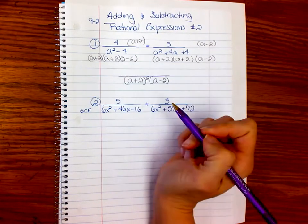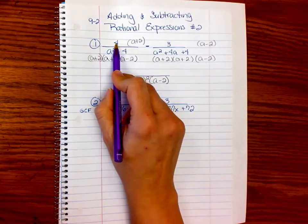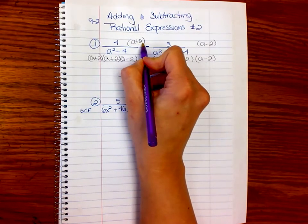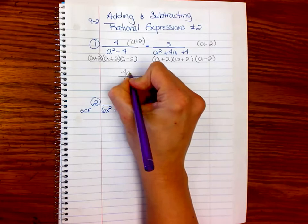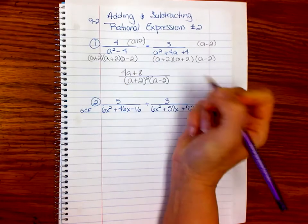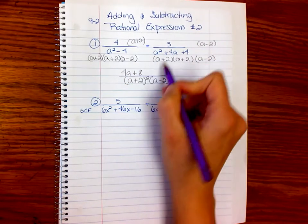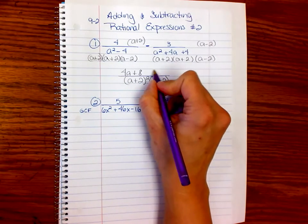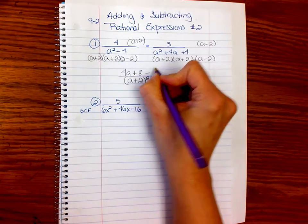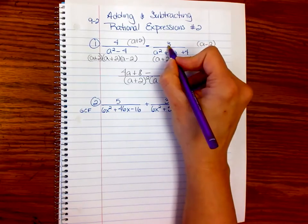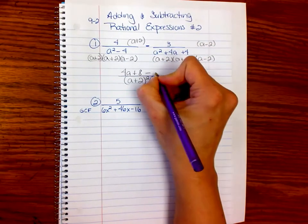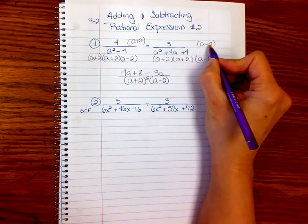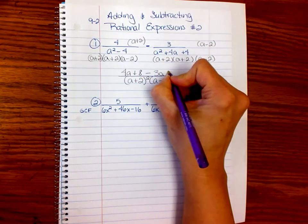The first one is 4 times a plus 2. So that's 4a plus 8. The next one, and since it's a common denominator, I'm going to write them both in the numerator here. So I'm going to say minus, now let's multiply that out. What's 3 times a? It's 3a. But then I have a negative 3 times a negative 2, which is a positive 6.